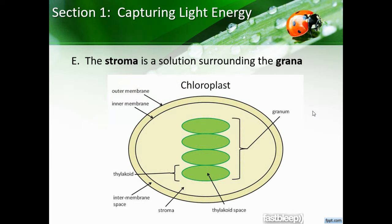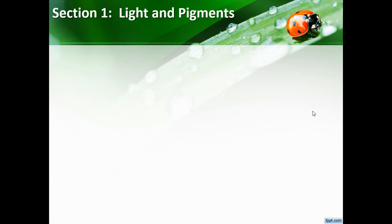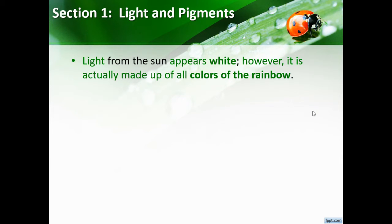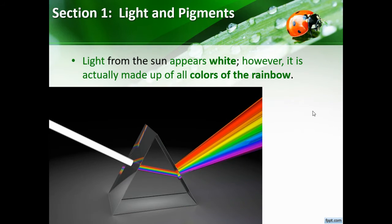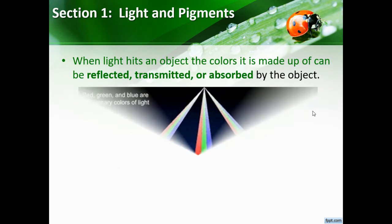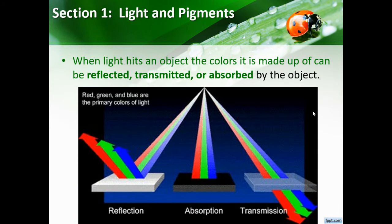The thylakoids are connected and layered to form stacks called grana; the singular form is granum. The stroma is a solution surrounding the grana, much like our cytoplasm. Light from the sun appears white but is actually made up of all the colors of the rainbow. When light hits an object, the colors it is made up of can be reflected, transmitted, or absorbed — reflection is where light bounces off, absorption is where it's taken in, and transmission is where it passes right through.